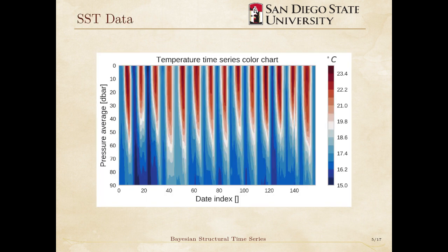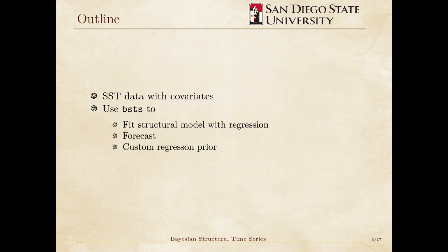Oh, what luck! Before us lies a multivariate time series of monthly sea temperature sampled every 10 meters up to 100 meters. Our trusty Bayesian Structural Time Series Modeling Toolkit, BSTS, allows us to include regression covariate components. Will including covariates improve our forecasting? This mystery is too good to pass up. Let's use our statistical modeling powers to find out.